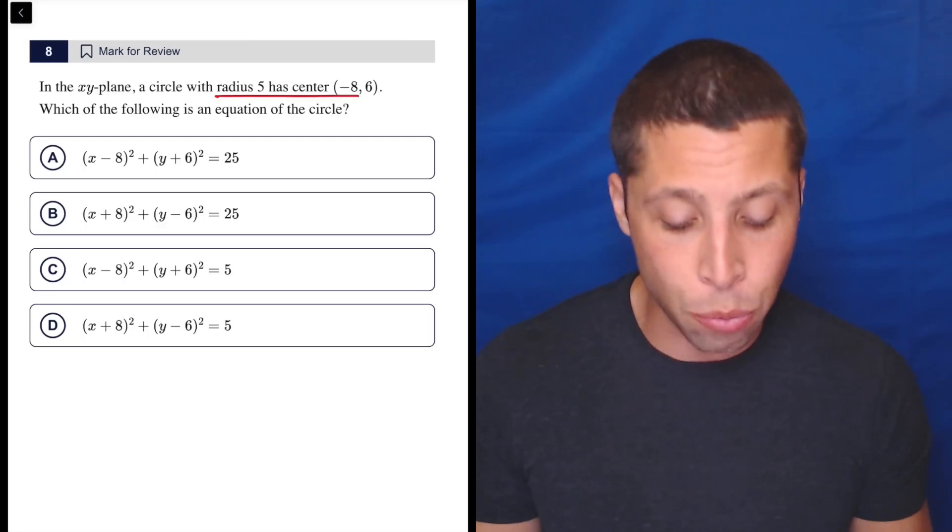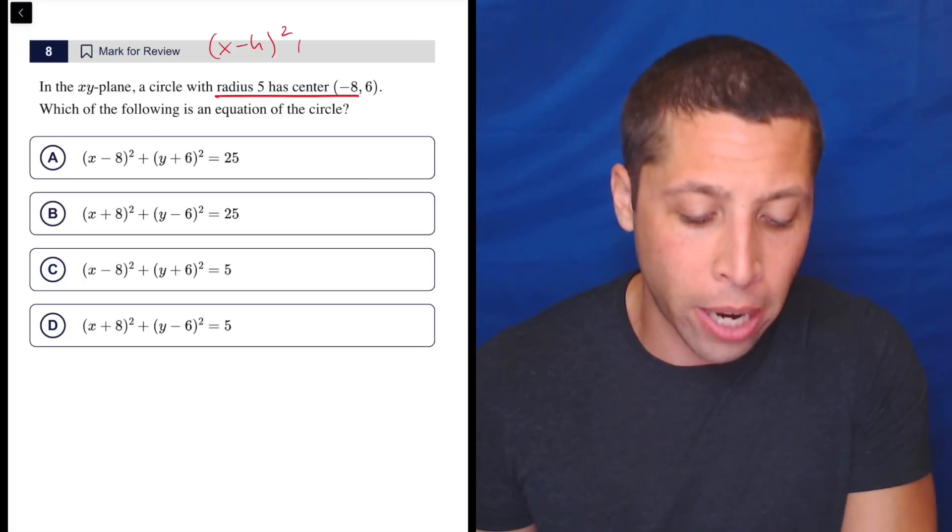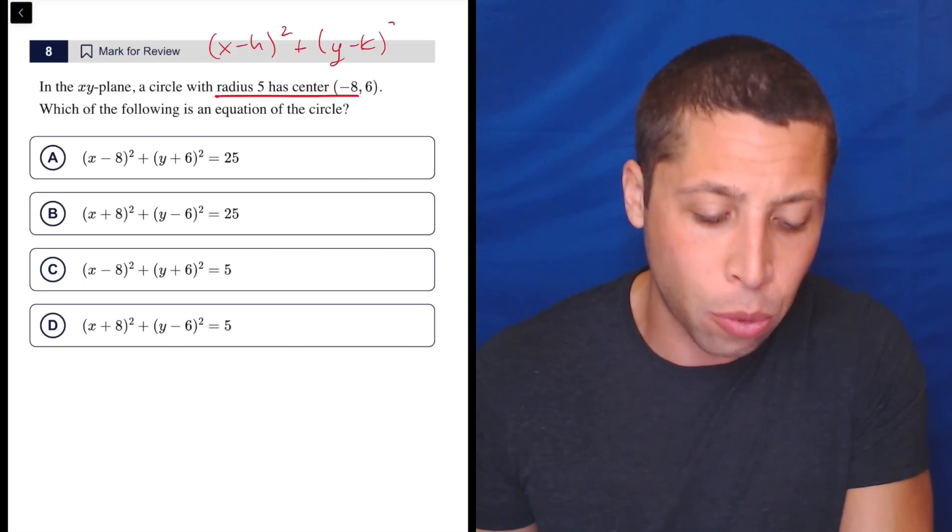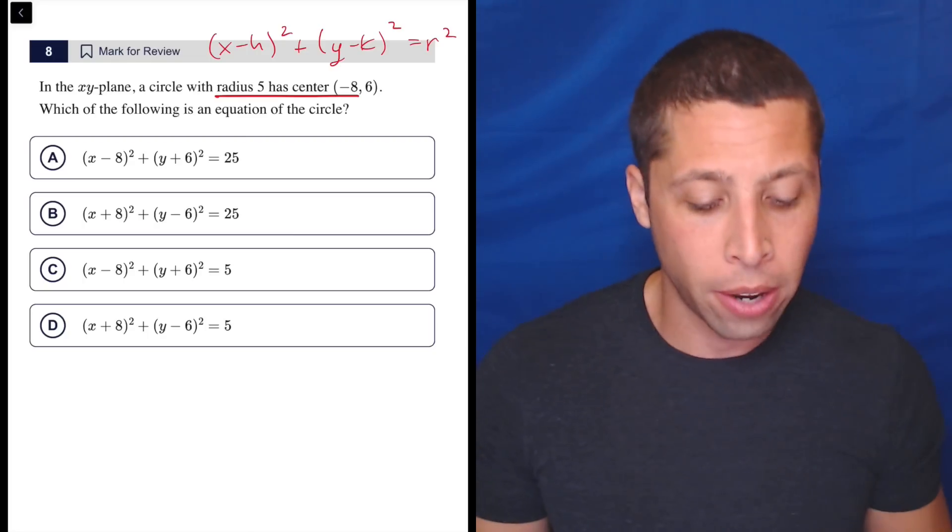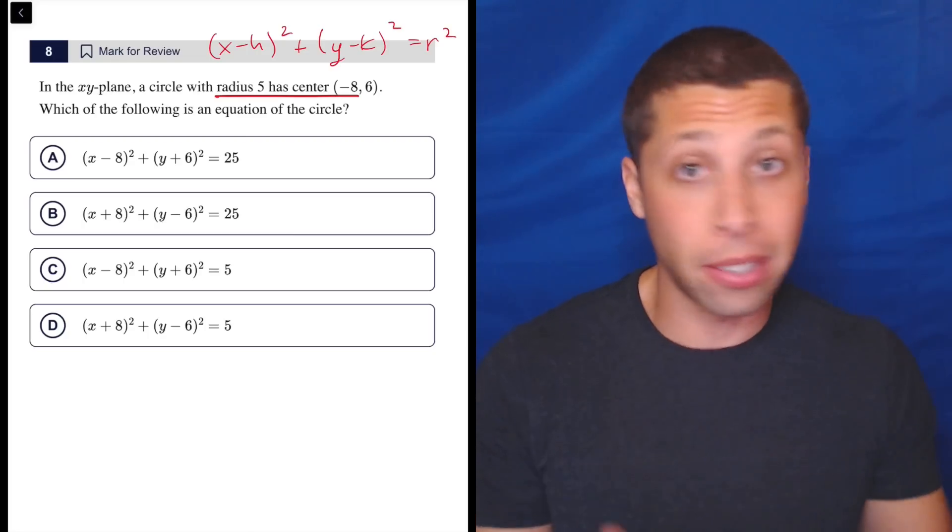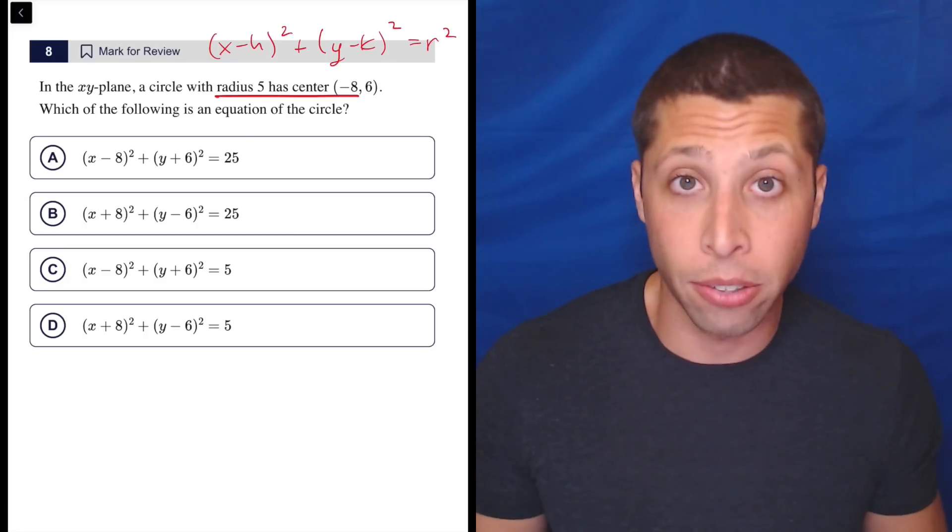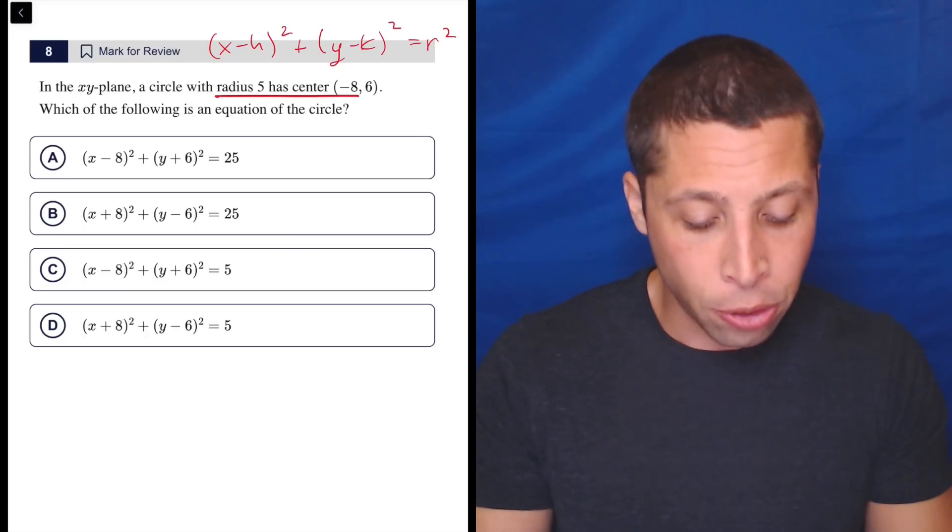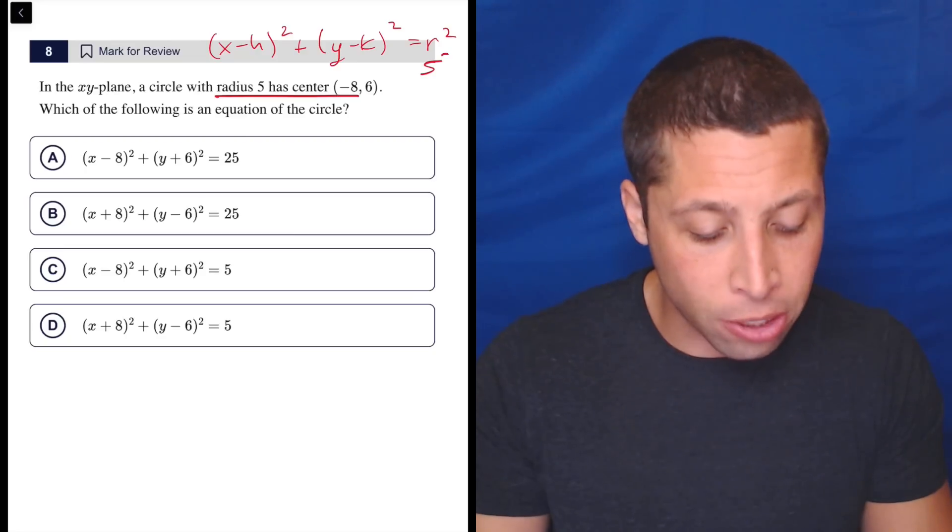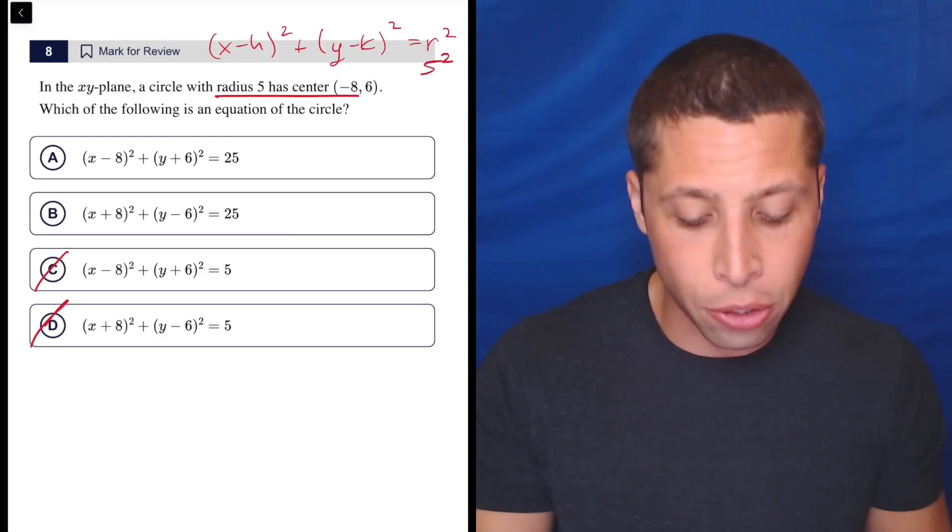x minus h squared plus y minus k squared equals r squared. So we can take this information and basically just plug points into equations, except instead of plugging in for the x and the y, we're plugging in for everything else. So the radius of five is going to square to get 25, so that gets rid of these two.